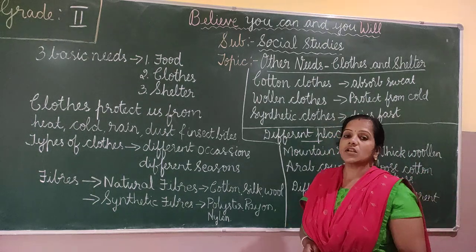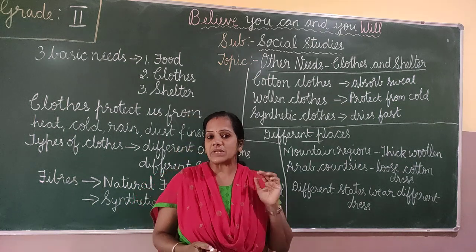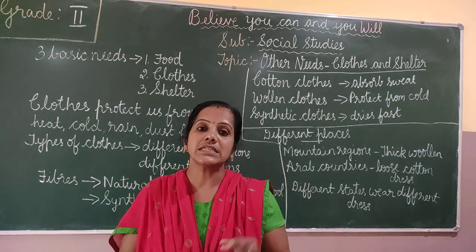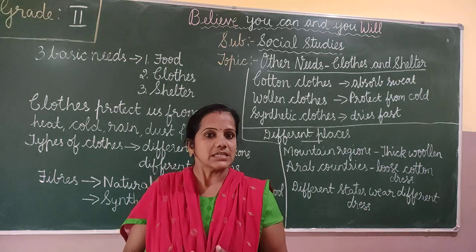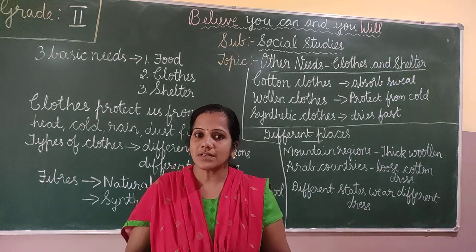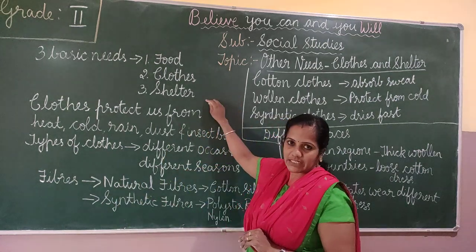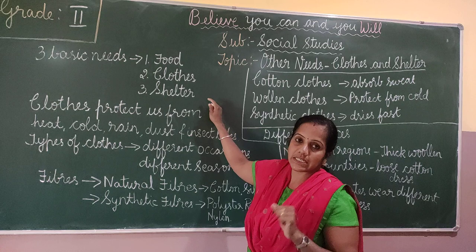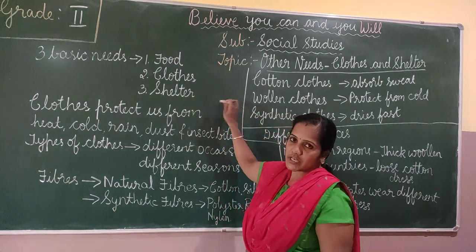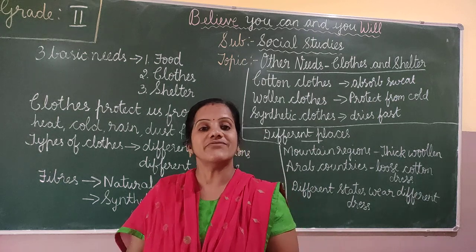Other needs — clothes and shelter. So children, as I told you in the previous class, there are 3 important basic needs for all the living beings to survive. So what are they? Food, clothes, shelter. So in the previous class we have learnt about food.